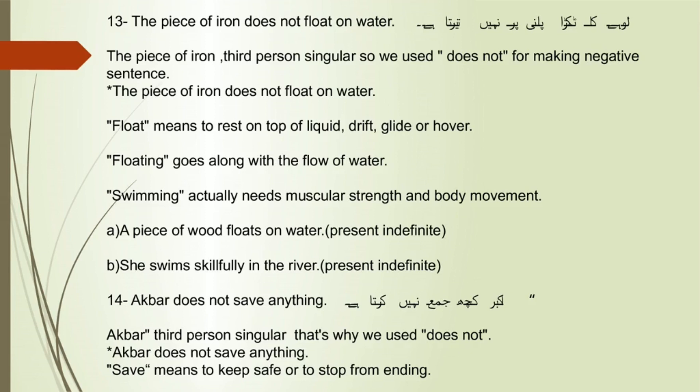Sentence 13: The piece of iron does not float on water. 'The piece of iron' is third person singular, so we used 'does not' for making the negative sentence. The piece of iron does not float on water. Float means to rest on top of liquid — drift, glide, or hover. Floating goes along with the flow of water, whereas swimming actually needs muscular strength and body movement. A piece of wood floats on water — Present Indefinite.